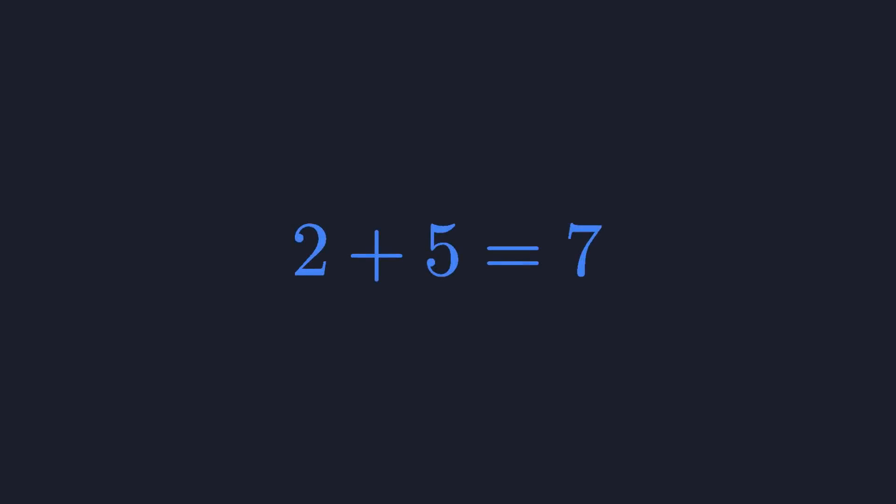Here's a second example. 2 plus 5 equals 7. Again, I hope you agree. This time, when we swap the inputs, the resulting sum is still 7. Addition is commutative.